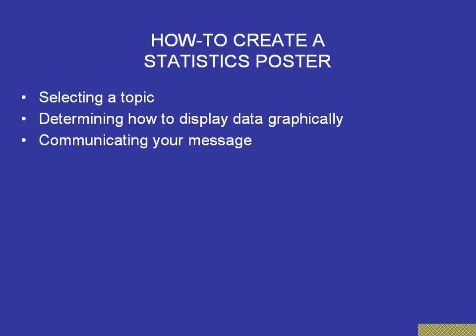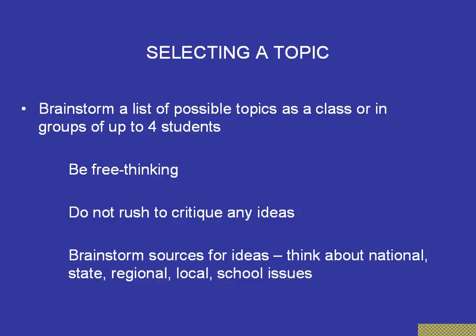So probably the most important thing in selecting a topic is to brainstorm ideas. For grades K through 3, as many students as the entire class can work on one poster, but in all other grade categories — 4 to 6, 7 to 9, and 10 to 12 — you can have up to four students. What works very well is to have students do free thinking and make a big list on the whiteboard of all possible ideas without trying to narrow them down at this point. We encourage students to think beyond simply their school, to look at national issues, regional issues, things that would be interesting to a judge outside of the school.